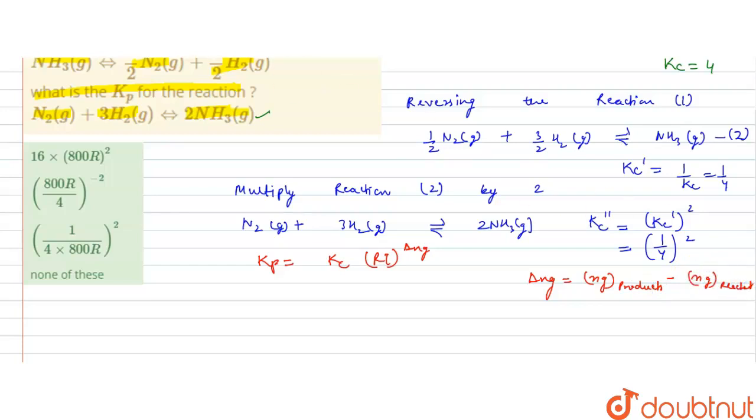Now the gaseous moles of products is 2NH3, that is 2 minus the gaseous moles of reactant, that is 3 plus 1, that is 4. So it would be minus 2.